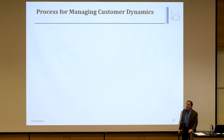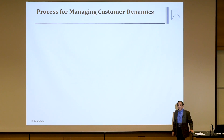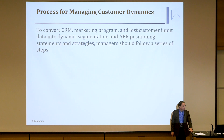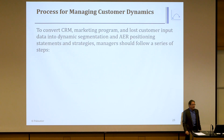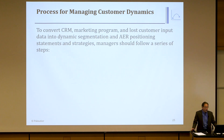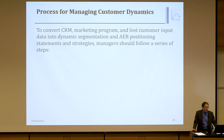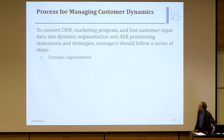What's nice about this grid is that the three stages account for customer dynamics, and the three personas account for customer heterogeneity — taking into account both market principle one and market principle two. Ideally, we also want to know the CLV of each of those stages. The process to convert CRM, market program, and lost customer inputs into dynamic segmentation and AER positioning and strategies: managers should follow a sequence of steps.